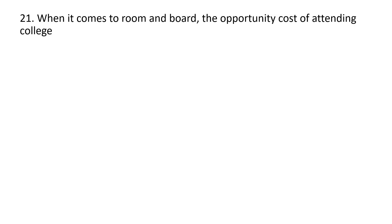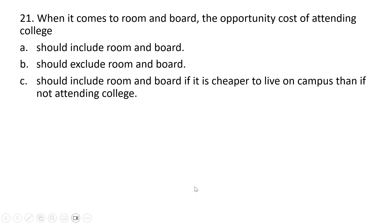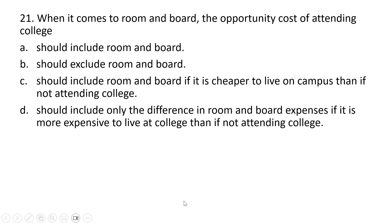Question 21. When it comes to room and board and the opportunity cost of attending college, the correct answer is D: it should include only the difference in room and board expenses if it is more expensive to live at college than to live if not attending college.